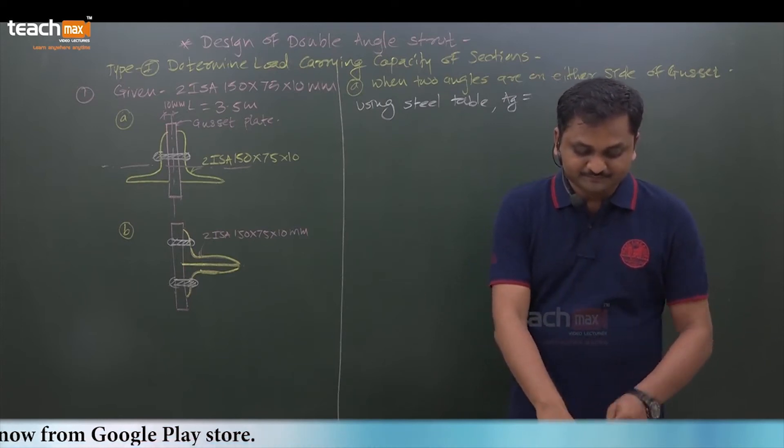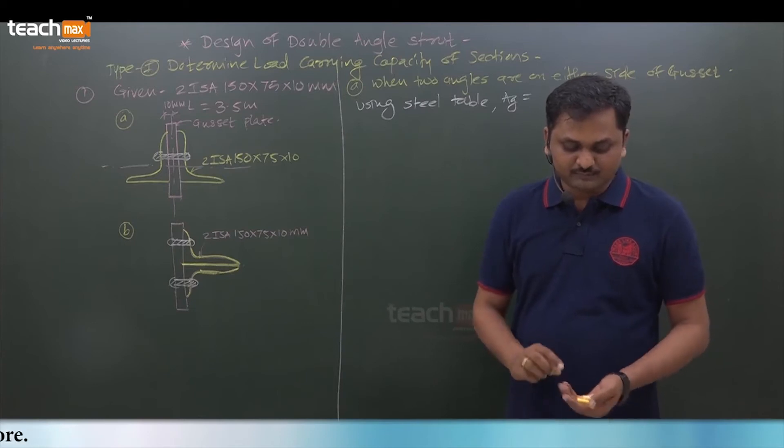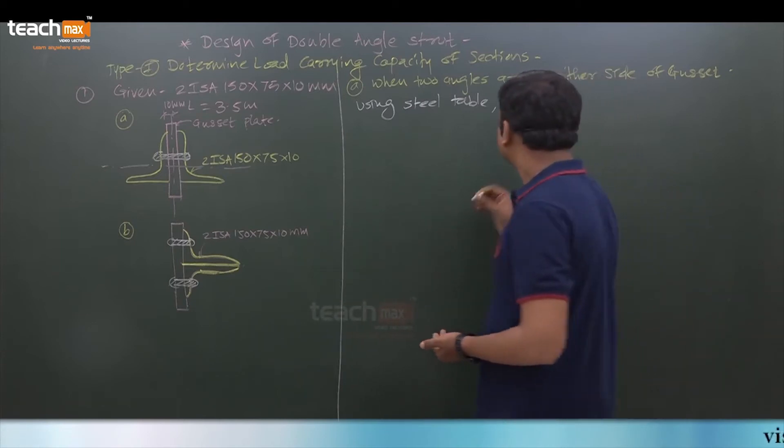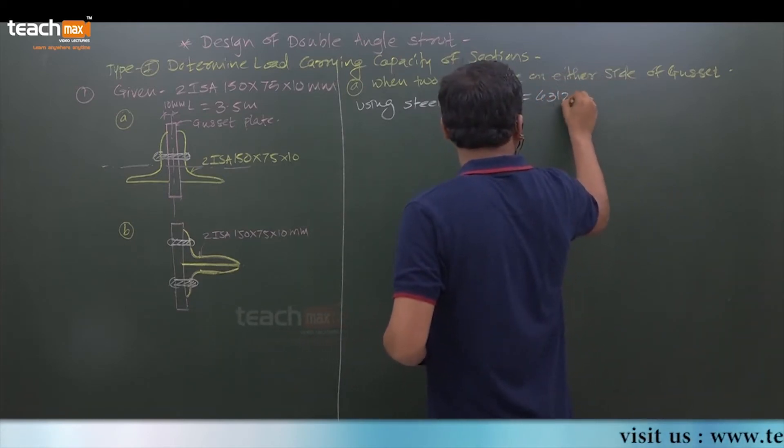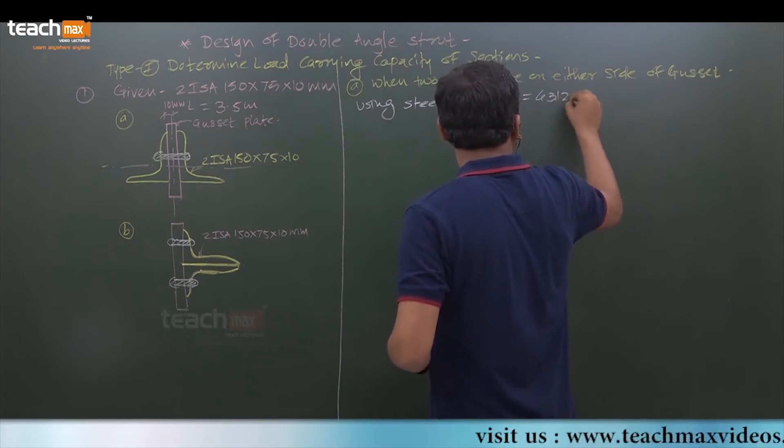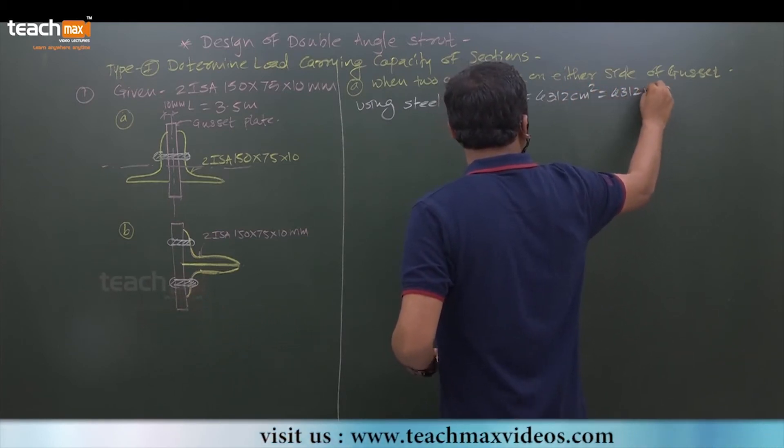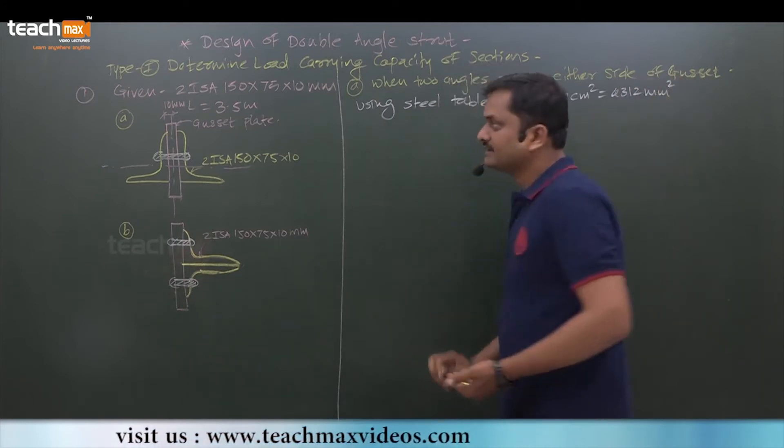Cross sectional area: 43.12. So 43.12 cm square means 4312 mm square. This will be the area that we will consider.